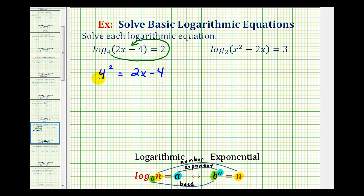And now we'll solve this equation for x. Four squared is equal to 16. So we'll add four to both sides. So it'd be 20 equals 2x. Divide both sides by two. So we have 10 equals x, or x equals 10.